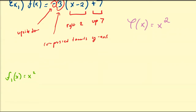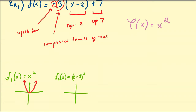What does this function look like? That function is the parabola. Now let's shift it to the right 2 — that's f2(x) = (x-2)². That's going to shift everything to the right 2, so the vertex is going to be located there, giving us that parabola.